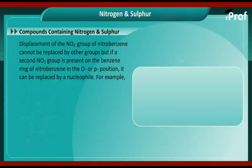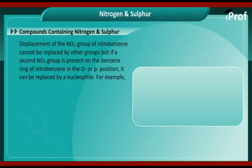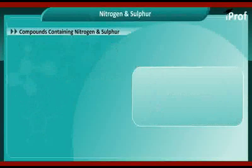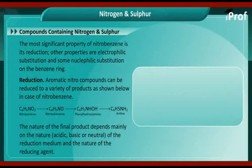Displacement of the NO2 group: The NO2 group of nitrobenzene cannot normally be replaced by other groups. But if a second NO2 group is present on the benzene ring of nitrobenzene in the ortho or para position, it can be replaced by a nucleophile. For example, when para-dinitrobenzene reacts with aqueous KOH, ammonia, or C2H5OK (potassium ethoxide), it gives the corresponding product where Nu equals OH, NH2, or OC2H5. The most significant property of nitrobenzene is its reduction; other properties include electrophilic substitution and some nucleophilic substitution on the benzene ring.